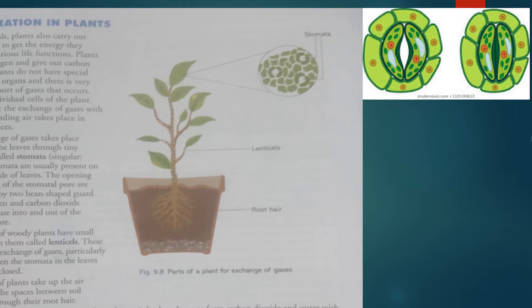Plants take in oxygen and give out carbon dioxide. Plants do not have special respiratory organs and there is very little transport of gases. All the individual cells of the plant respire, but the exchange of gases with the surrounding air takes place in specific places.